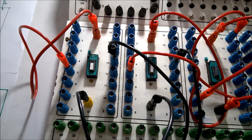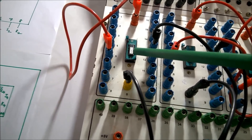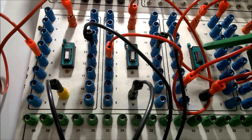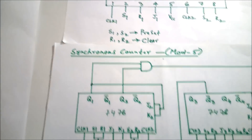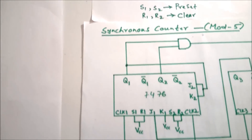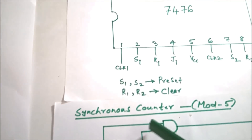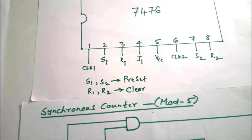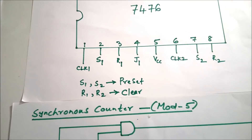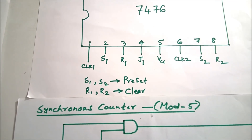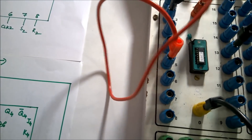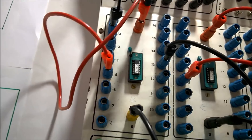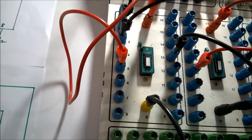Starting physical connections: the two ICs are 7476 and the AND gate is 7408. VCC and ground are connected accordingly. The S1, R1 (preset and clear) pins — pin numbers 2 and 3 — must be connected to VCC to deactivate them. Pins 2 and 3 are connected to VCC, and pin 3 is also confirmed connected to VCC.